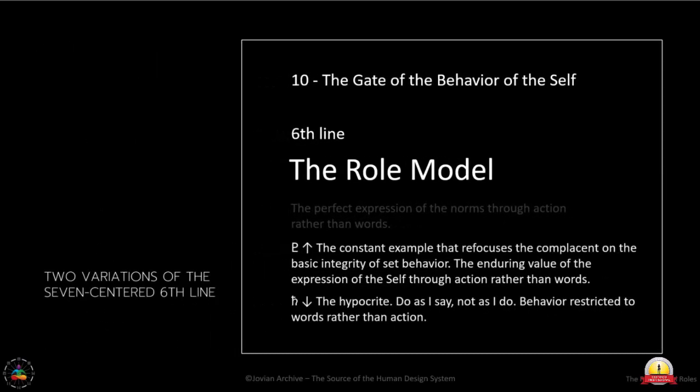You may see somebody who is a hypocrite — someone who tells you what to do but does not do it themselves. These are two variations of what it is to be a seven-centered sixth line. Remember how Ra said the I Ching was written for the not-self? The extreme, rather than being in alignment with your form or mind, in this case mental differentiation — embodied being locked into one side or the other from the mind's perspective, rather than learning the perfect expression of the norms through action rather than words.